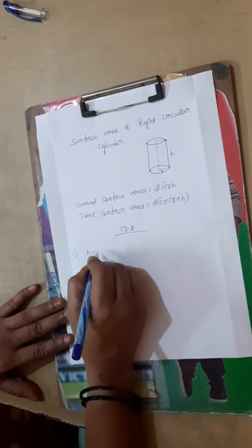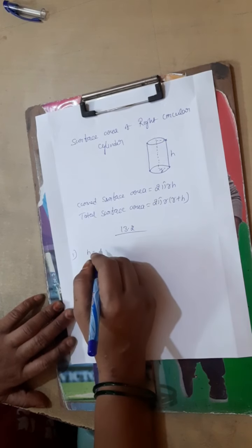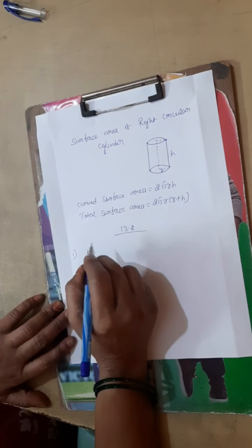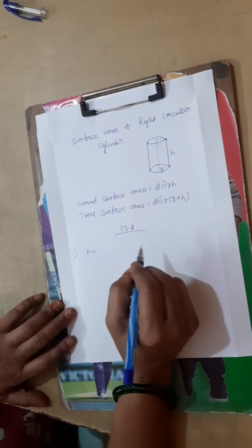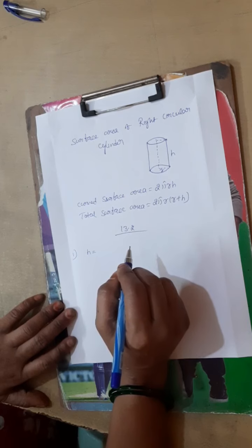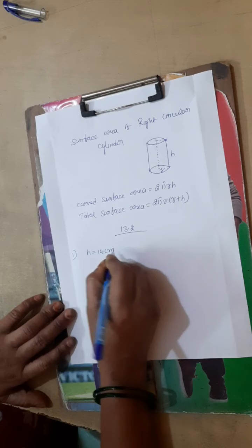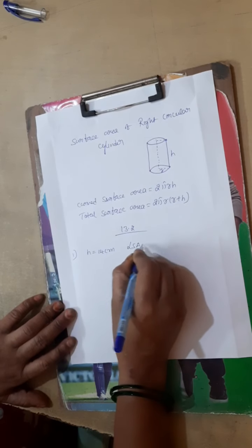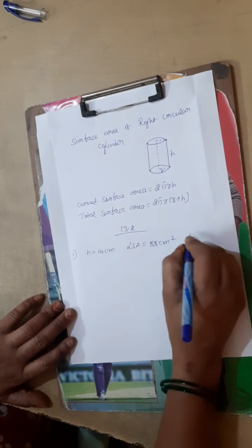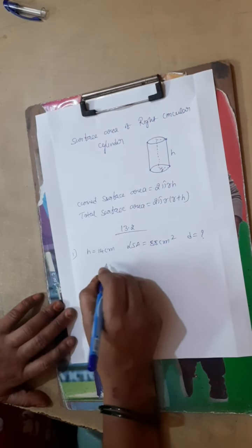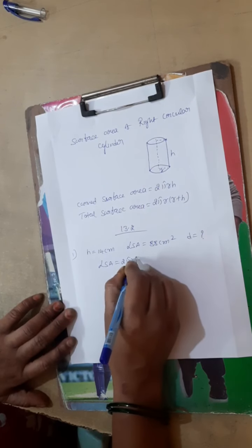First, let us write what is given and what is asked. Given: height H is equal to 14 centimetres, and CSA is equal to 88 centimetre square. To find: diameter D. Using the formula, CSA is equal to 2πrh.